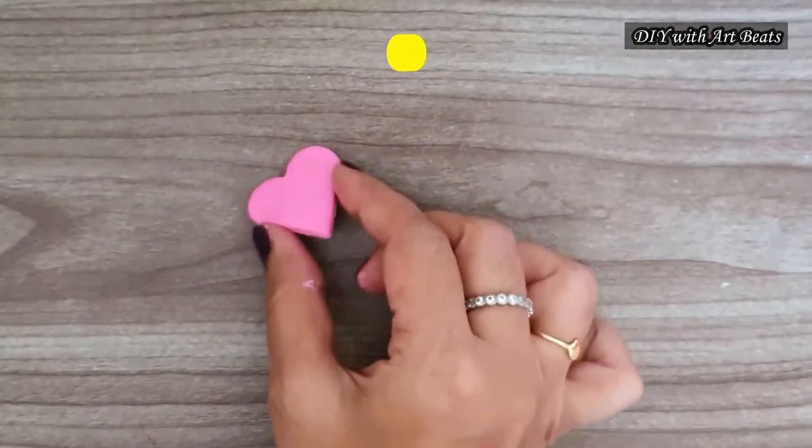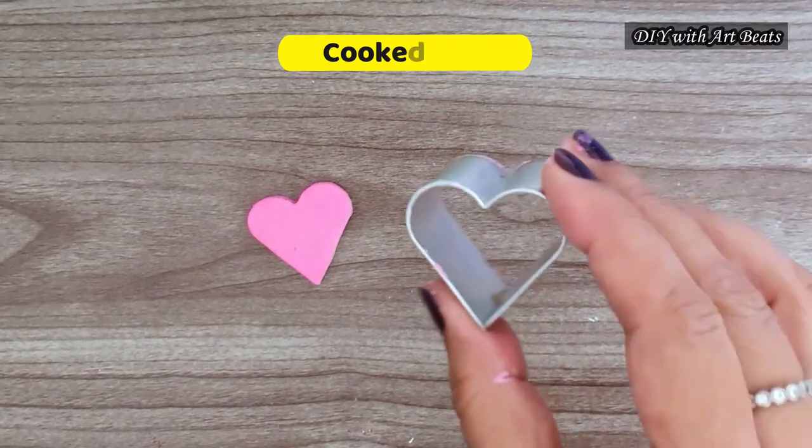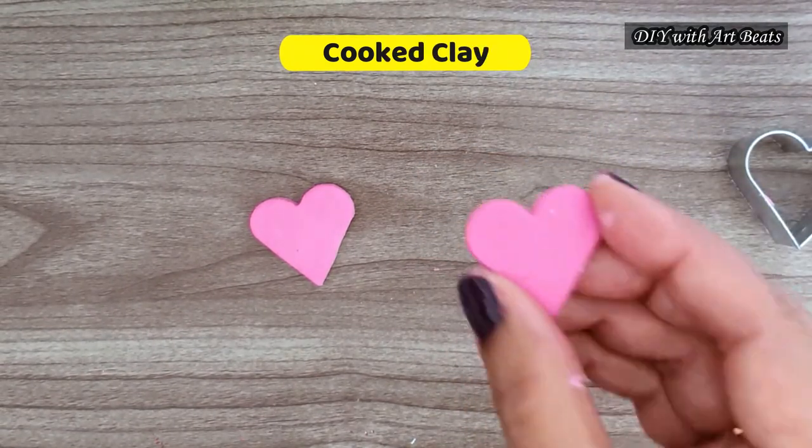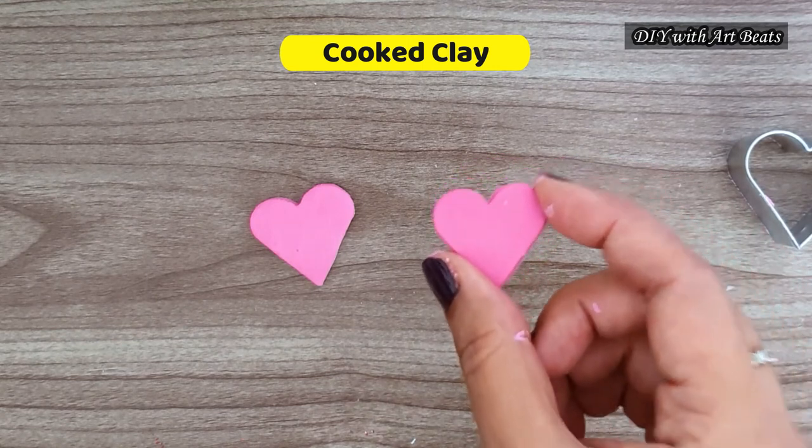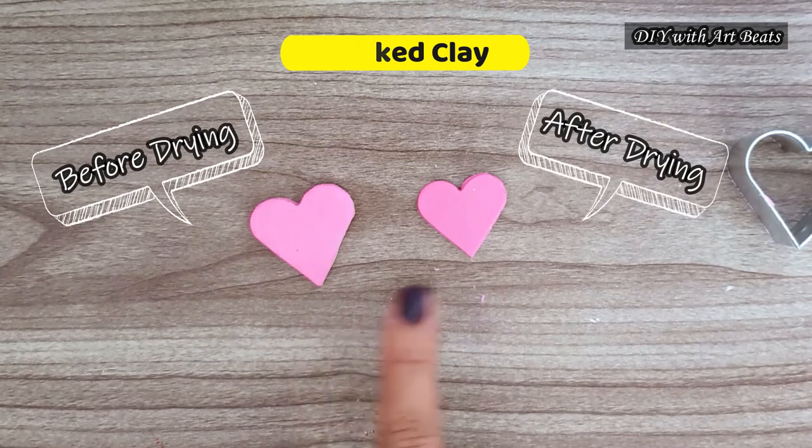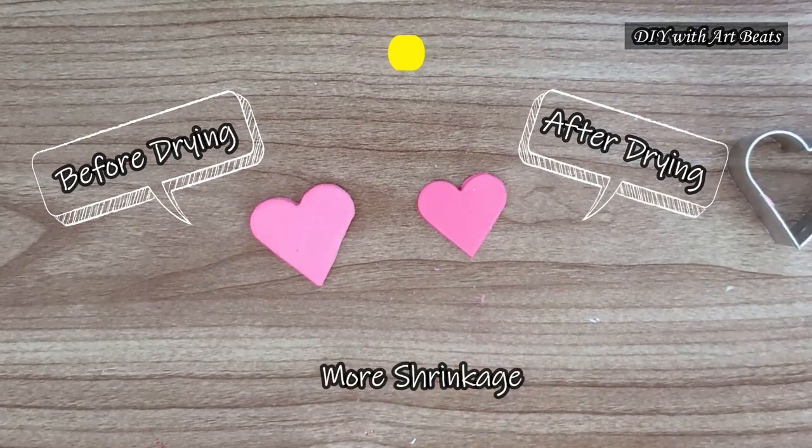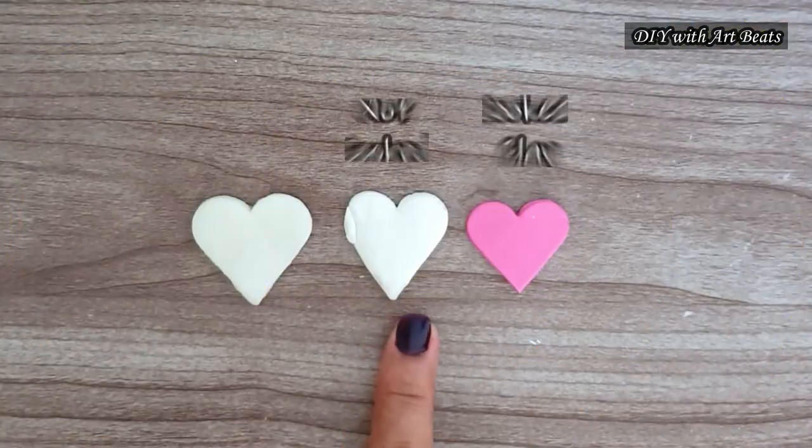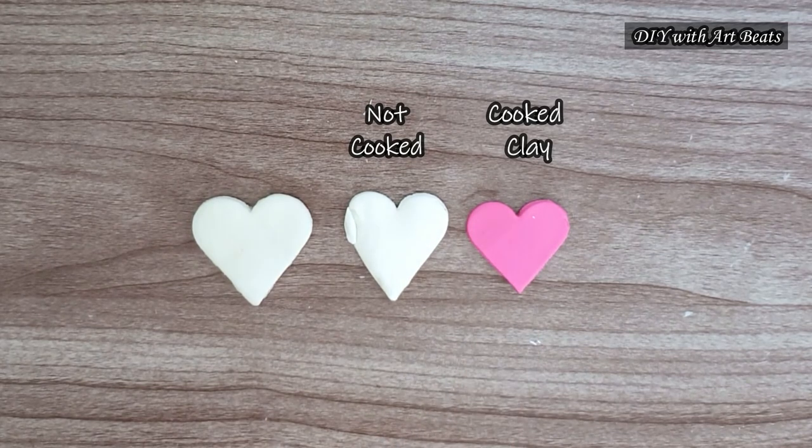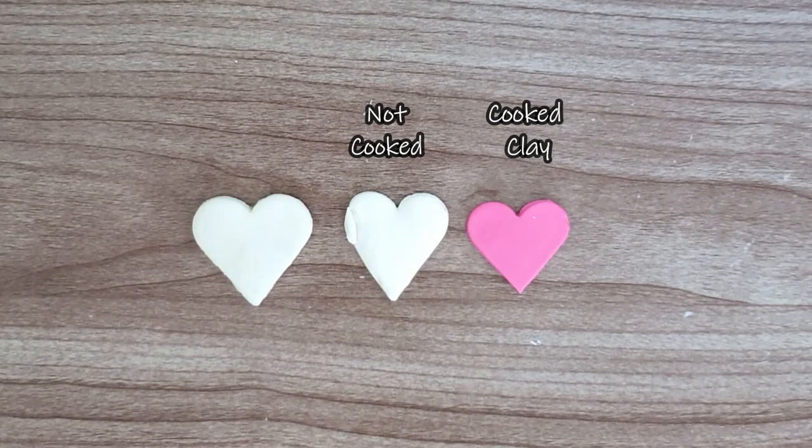Now let's check it for the cooked cold porcelain clay. This heart shape I have just made using this cookie cutter. And this one I made 2 days before. So you can see that there is more shrinkage in this cooked cold porcelain clay. So if we compare both cooked and not cooked clay together, you can see the difference in percentage of shrinkage of both.